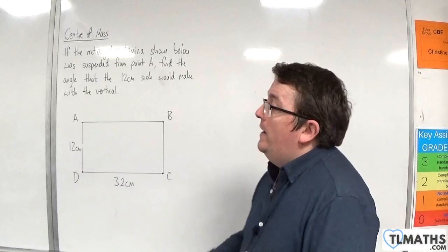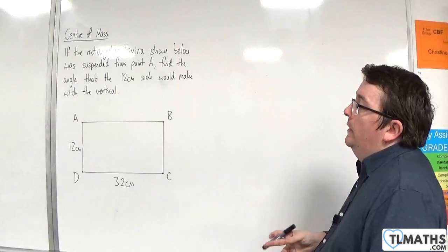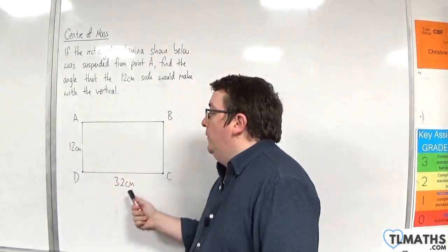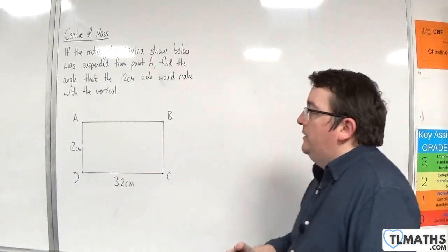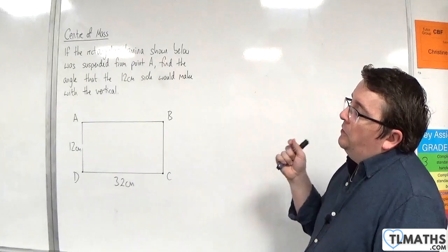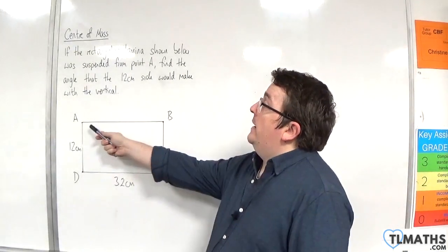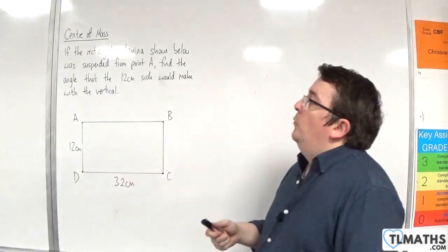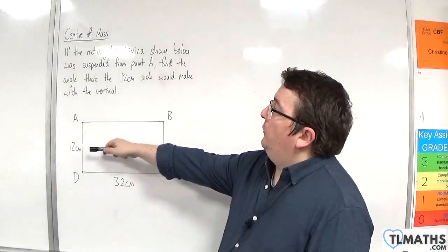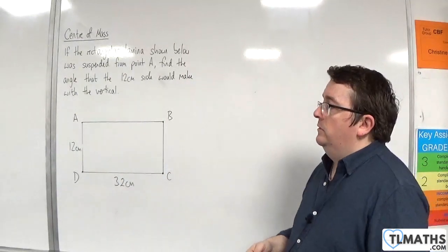In this example, we have a rectangular lamina that's of height 12 centimetres and width 32 centimetres, and it's going to be suspended from point A. We need to find the angle that the 12 centimetre side would make with the vertical.